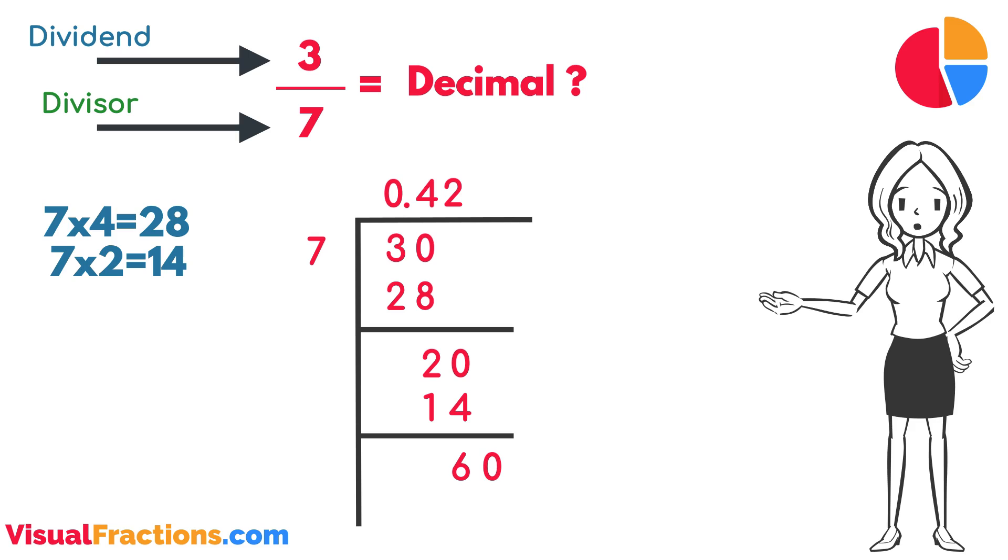Adding another zero gives us 60. How many times does seven go into 60? Eight times. We add this eight to our quotient, making it 0.428. After subtracting 56, seven times eight from 60, we get a remainder of four.